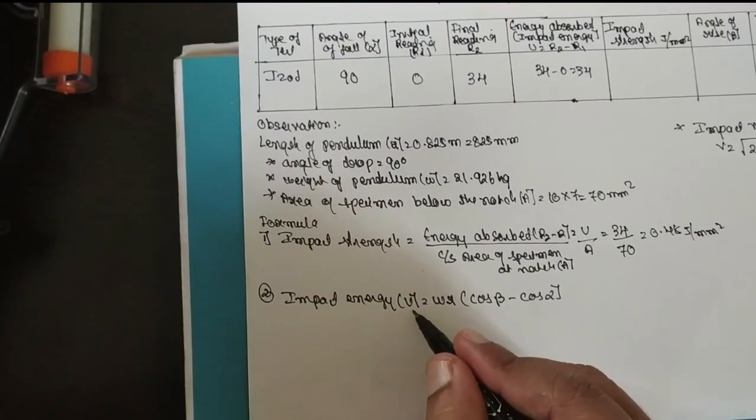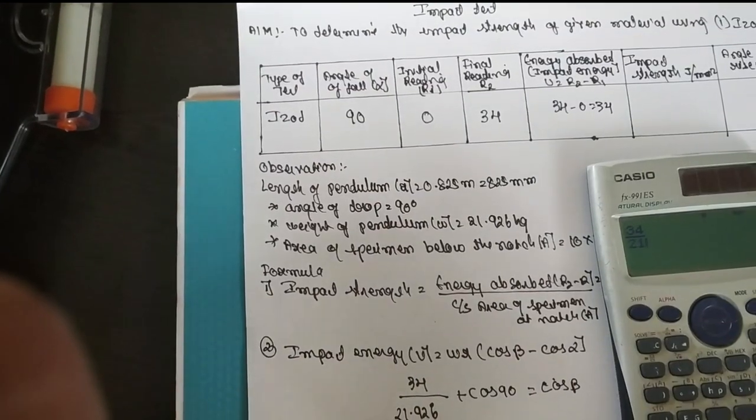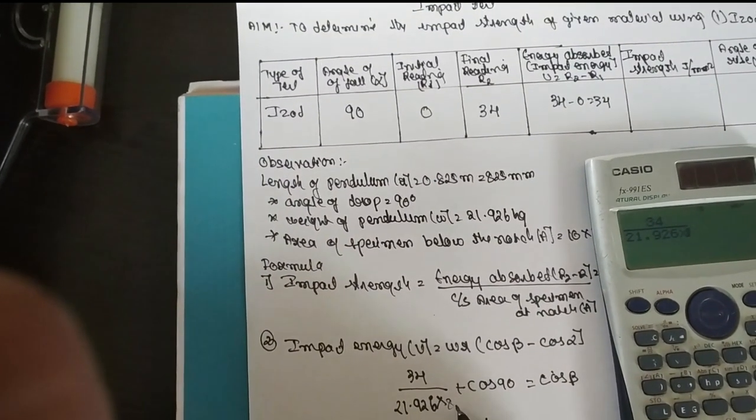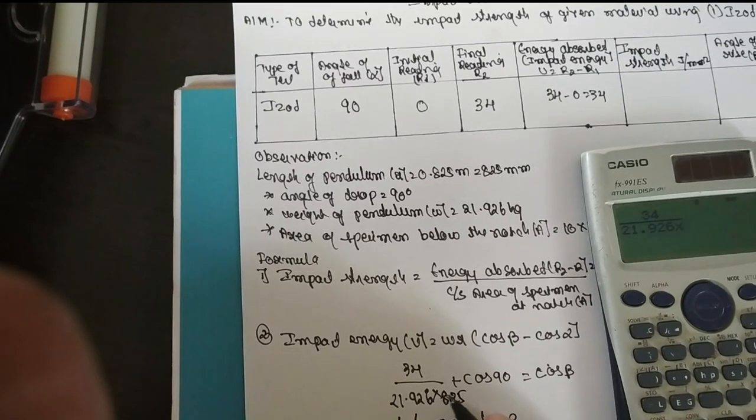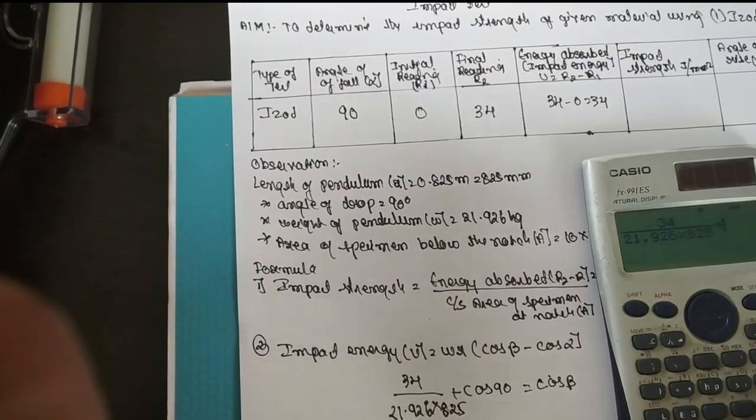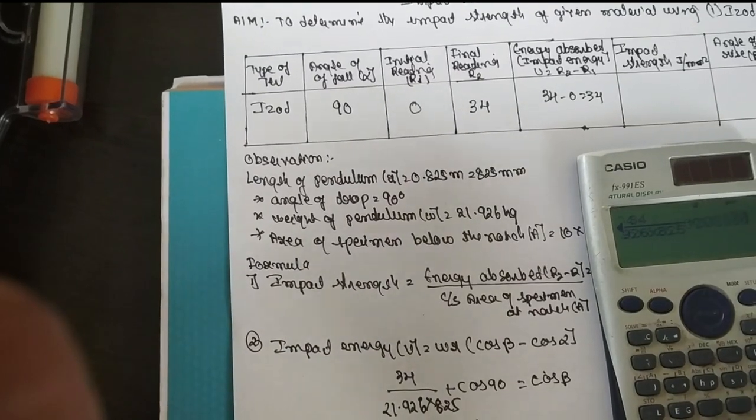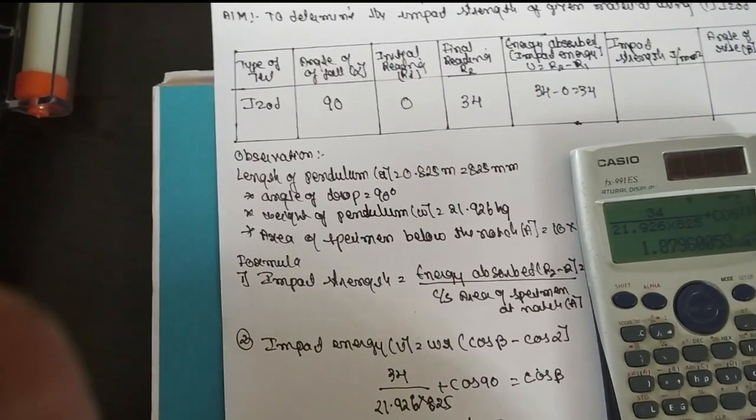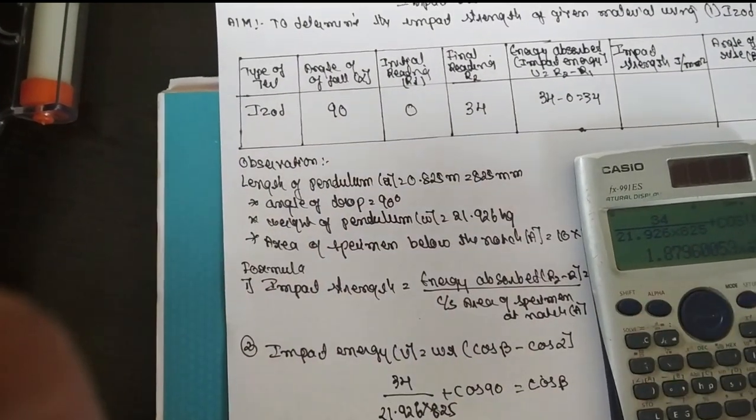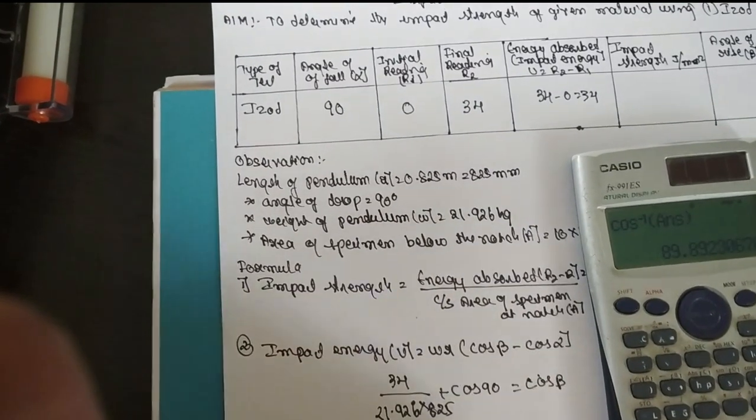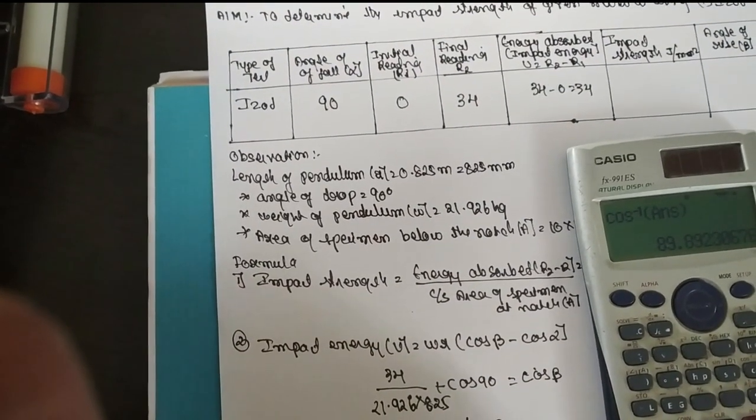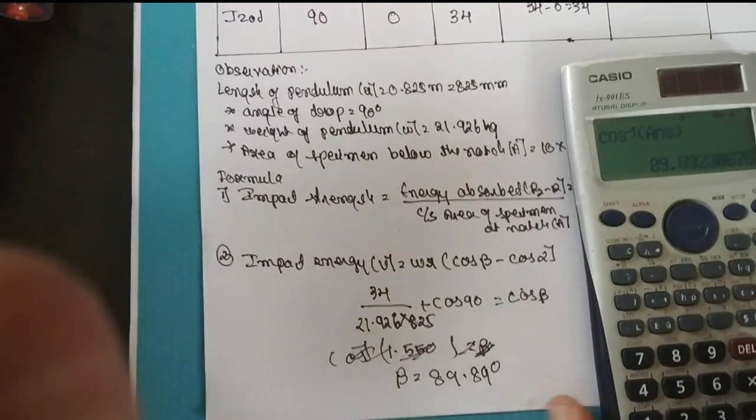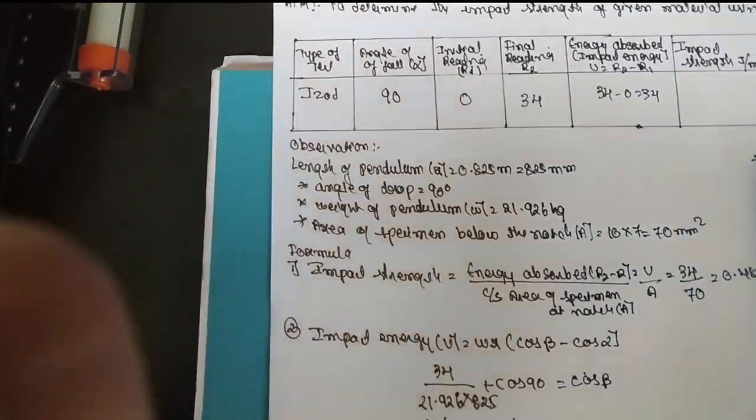Now, find out this part. U is already known. 34 divided by 21.926 into R value. R value is 825, plus cos 90. Answer is... this is the answer. Make it cos inverse, shift, cos inverse. You will get beta value is 89.89 degrees, which is almost equivalent to that of the 90 degrees.